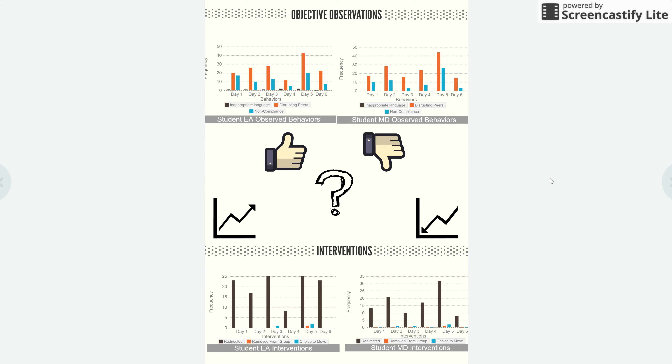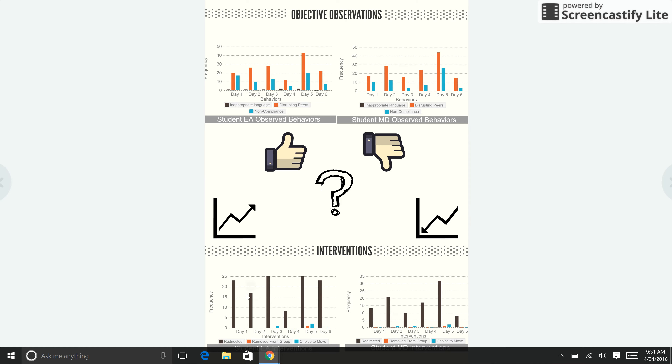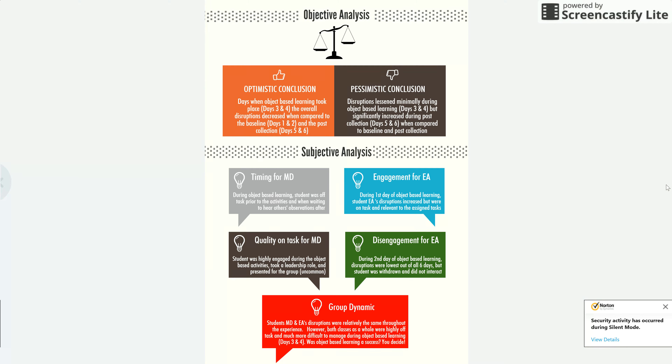Looking at the interventions down here, we have redirections and times students had to be removed from class. What was the final analysis? We have an optimistic conclusion and a pessimistic conclusion. Optimistically, when object-based learning was being done, overall disruptions did decrease compared to baseline. However, pessimistically, the day after object-based learning there was a huge spike in disruptive behavior.